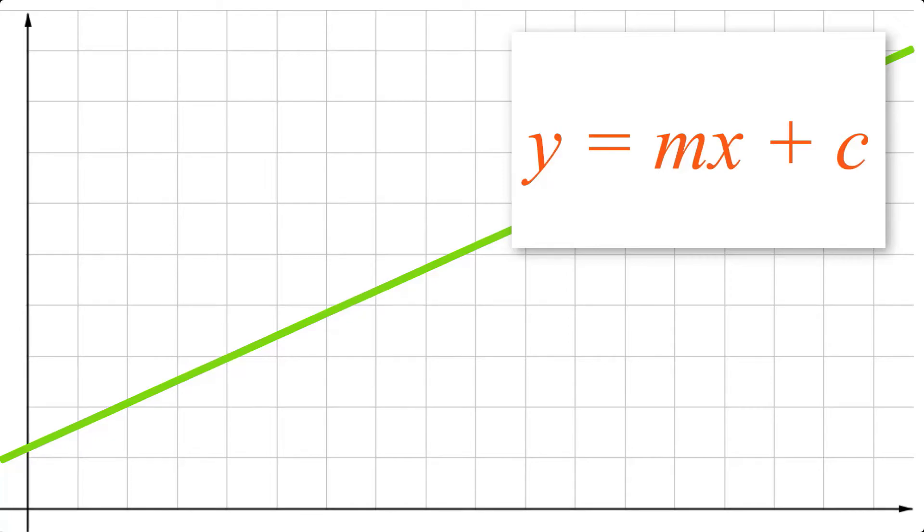And then m is the slope or the gradient. It tells us how the line moves or how steep the line is. Its formula is rise over run. For example, a gradient of 3 tells us that our line is going to rise by 3 every time it runs by 1, while a gradient of a third tells us that our line rises by 1 every time it runs by 3. A larger gradient means that the line is steeper, while a smaller one means that it's lighter. And we're going to talk a little bit more about the gradient very soon in the next video.